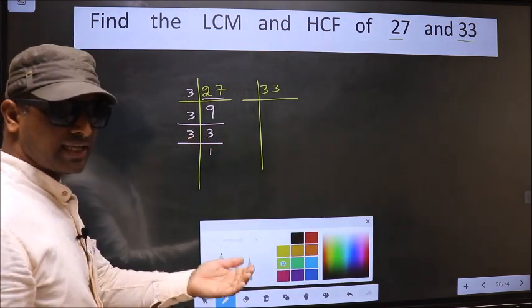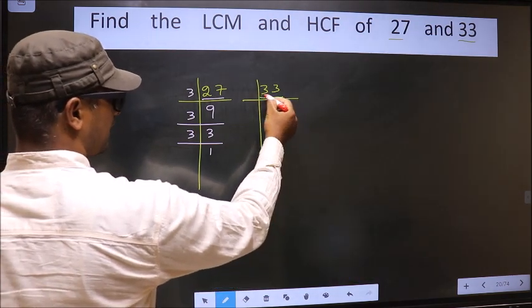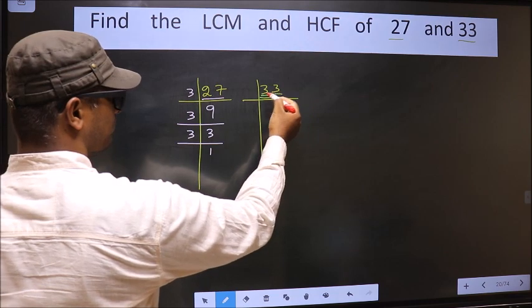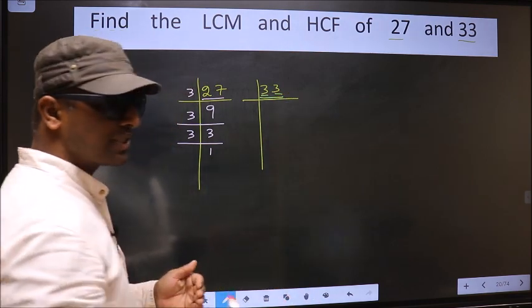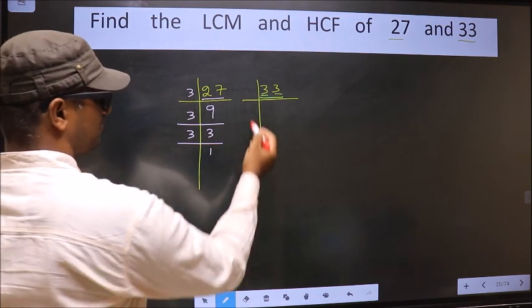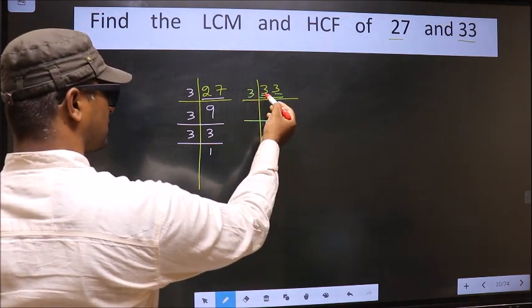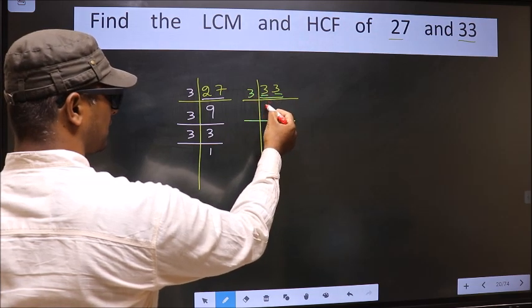Now the other number, 33. Here each digit is 3, and most important thing, 3 is a prime number. So we directly take 3 here. The first number is 3, when do we get 3 in 3 table? 3 once 3.